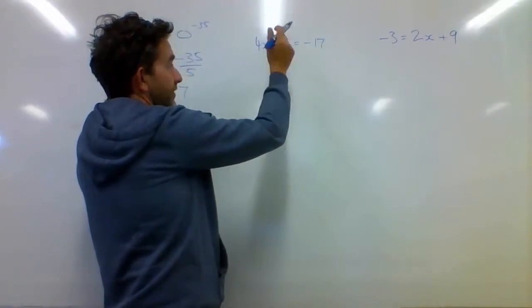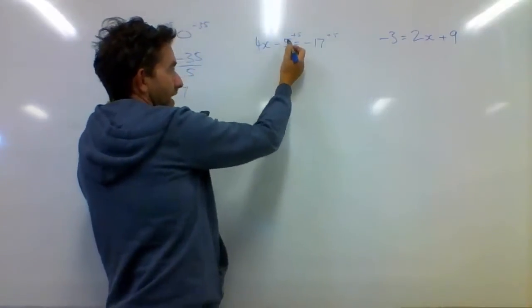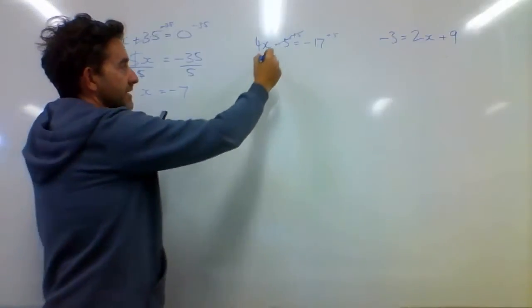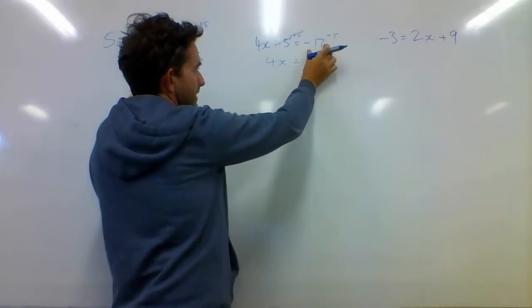So I'm going to add it to both sides. So if I add 5 here, and if I add 5 over there, then I can cancel out those 5s. Then I'm left with 4x being equal to negative 17 plus 5.